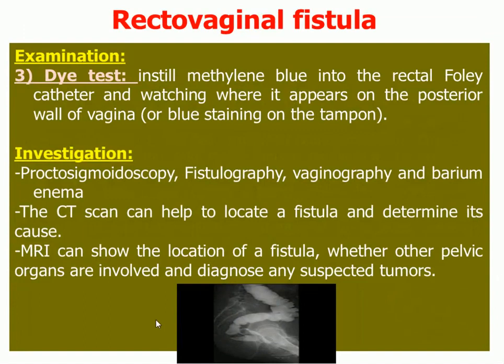We can also do a dye test using methylene blue by injecting it through a Foley catheter inserted inside the rectum, then watching where it appears on the posterior wall of the vagina. If a tampon is placed inside the vagina, you will find blue staining at the fistula site.